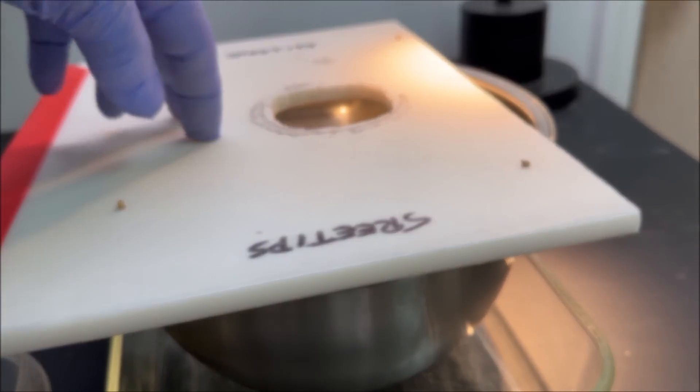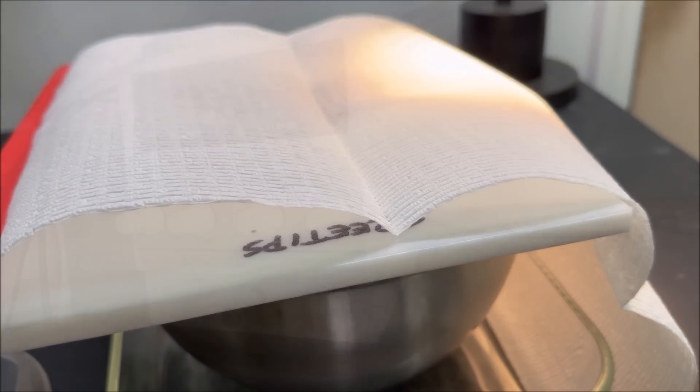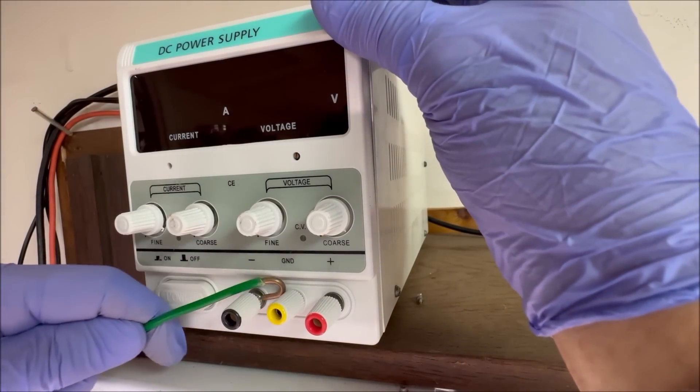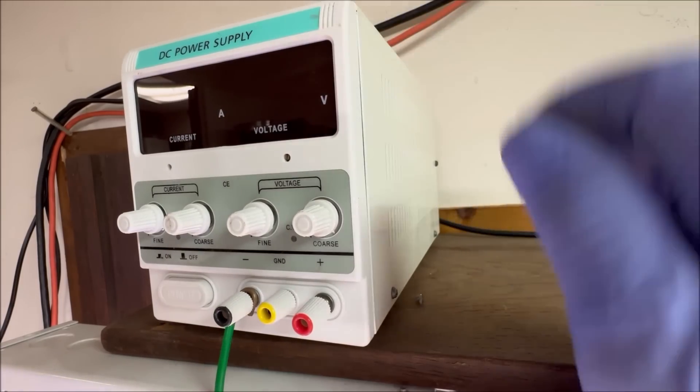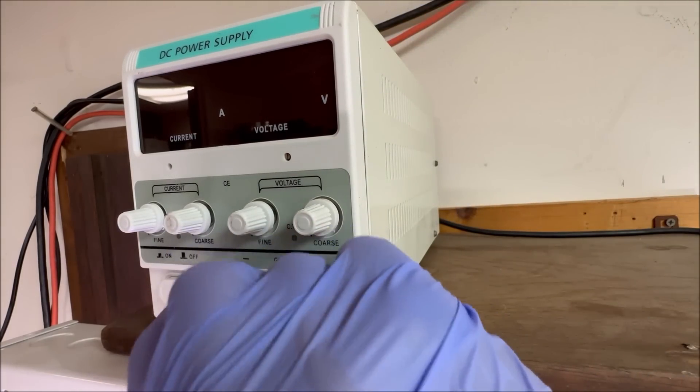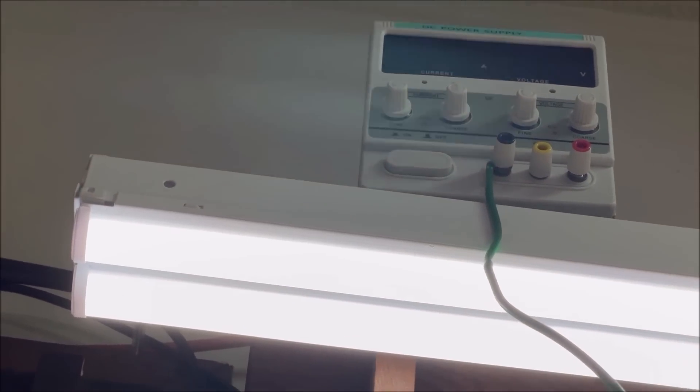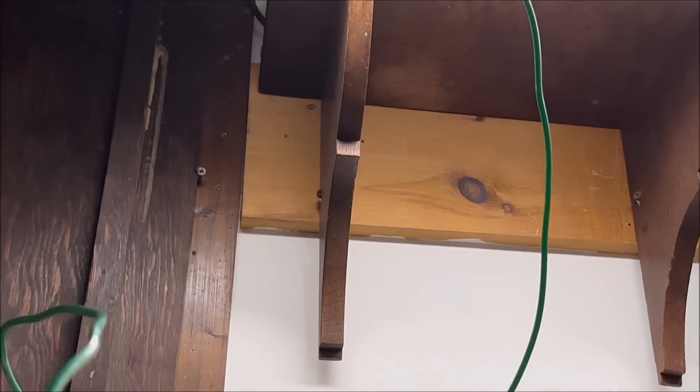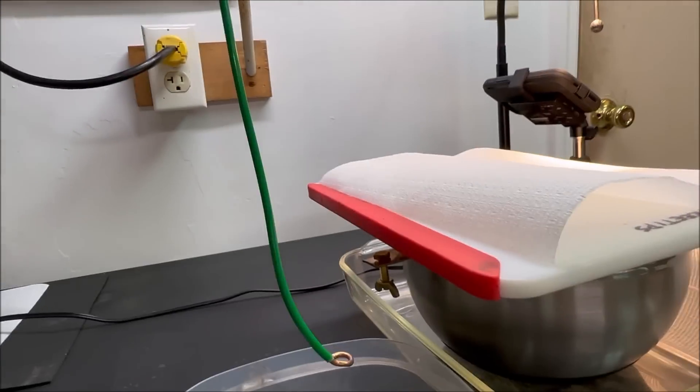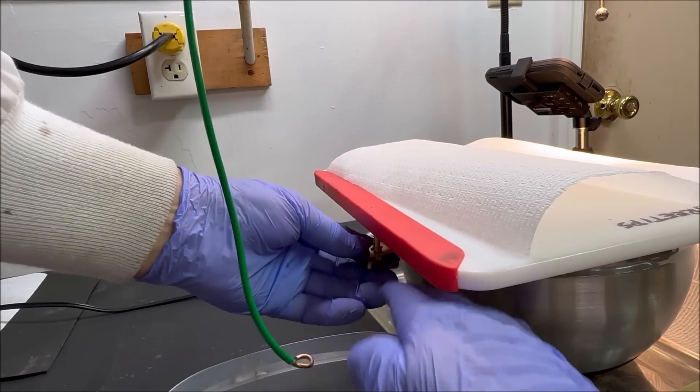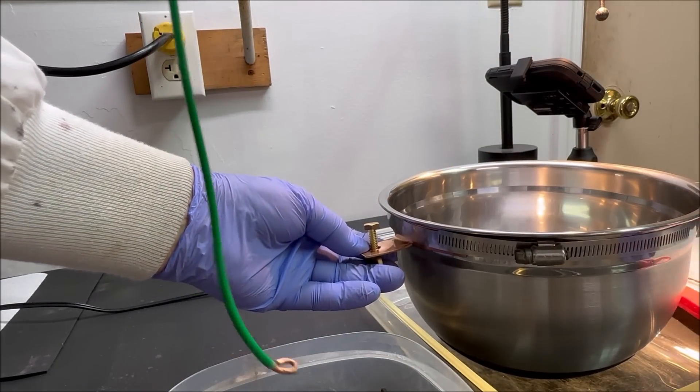And we'll cover this thing up with some paper towel just to make sure nothing falls down in there as we're working. This is the DC power supply that we use to run the cell. I'm hooking up the cathode connection to the negative side of the power supply. Now what we'll do is connect the other side of that cathode connection down here to the copper cathode connection point on the silver cell.